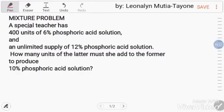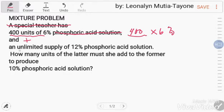Let me interpret this one by one so we can form an equation. The special teacher has 400 units of 6% phosphoric acid. This 400 units times 6%. Plus, unlimited supply of 12%.